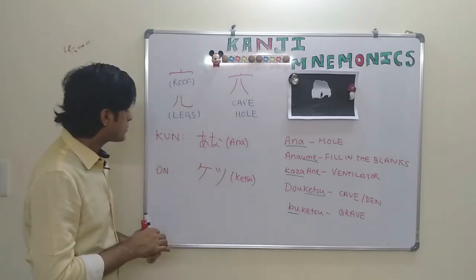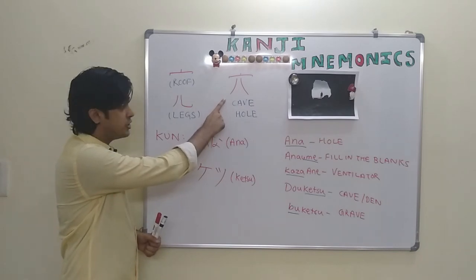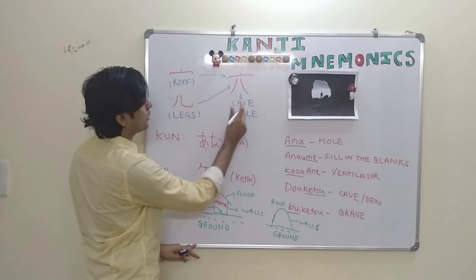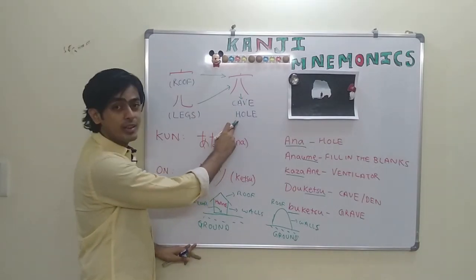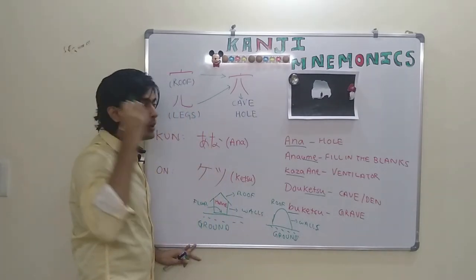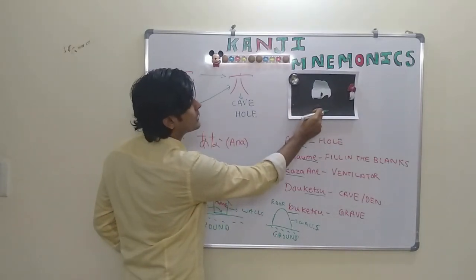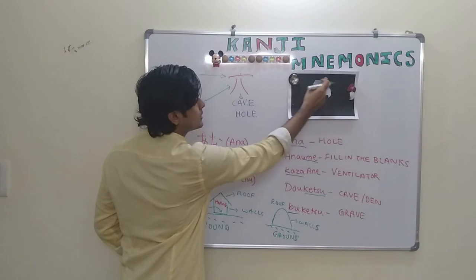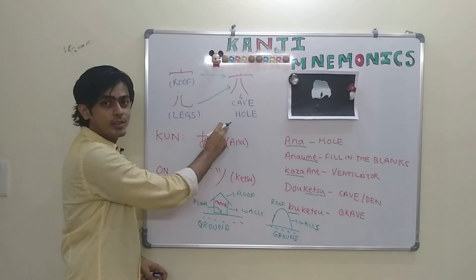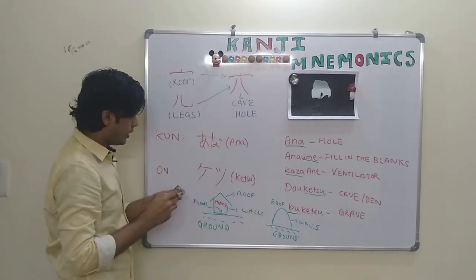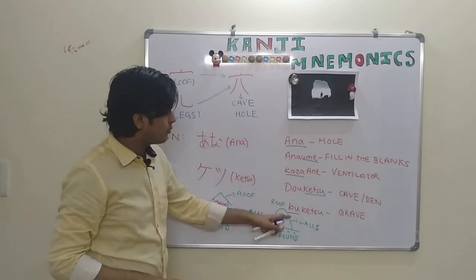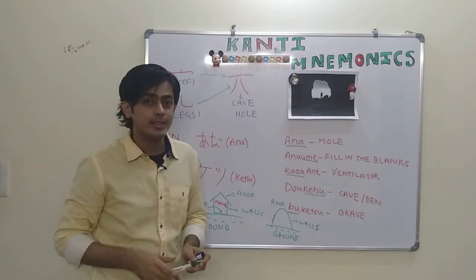So friends, we have covered this particular kanji which means this roof and this floor gives the meaning of cave, and the other meaning is hole, which you can associate with a memory when a person from the inside is looking at the outside, he sees this as a big hole. So these are the two meanings of this particular kanji. We learned the kun and on reading of this kanji and we learned some commonly used words and three example sentences.